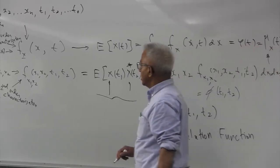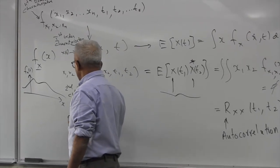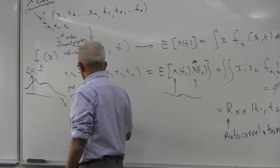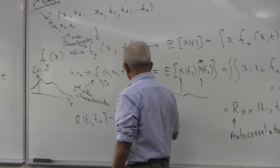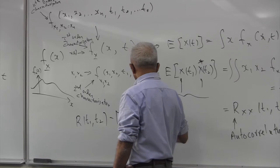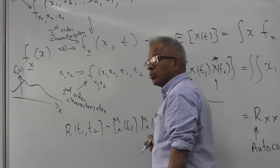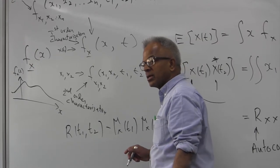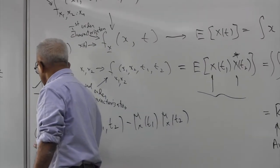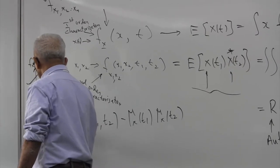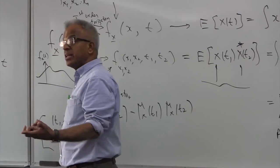If you want the covariance, it is R(t1, t2) minus mu(t1) times mu(t2). Remember, expected value of xy minus mu_x times mu_y was the covariance. So you can call this C_xx(t1, t2) — the autocovariance function.